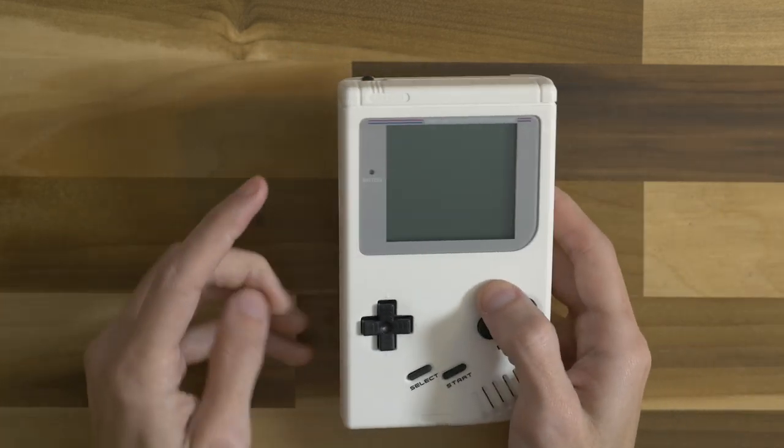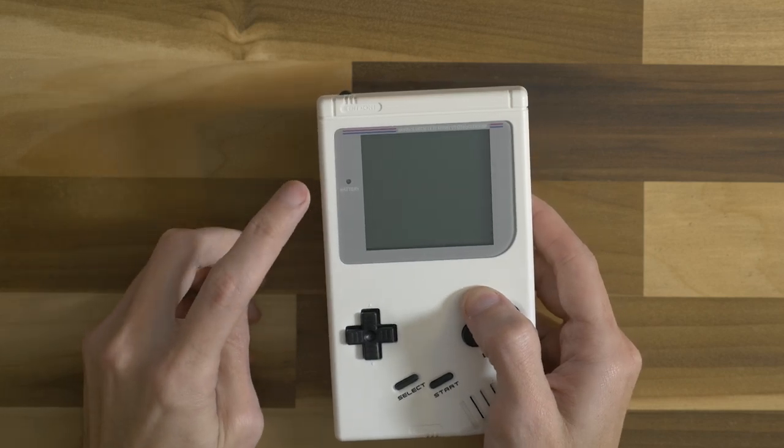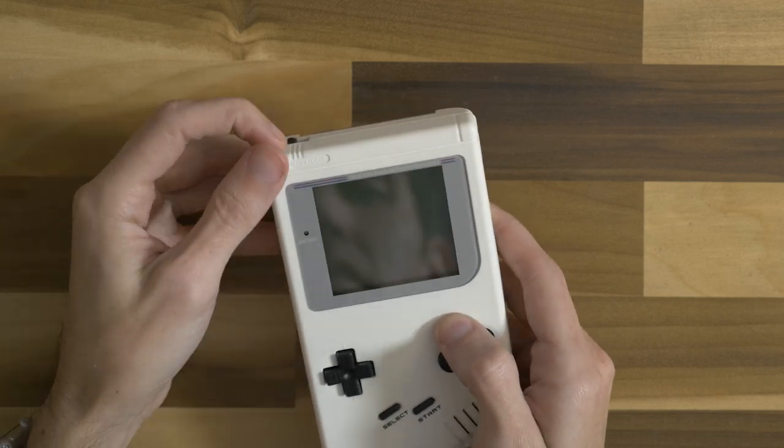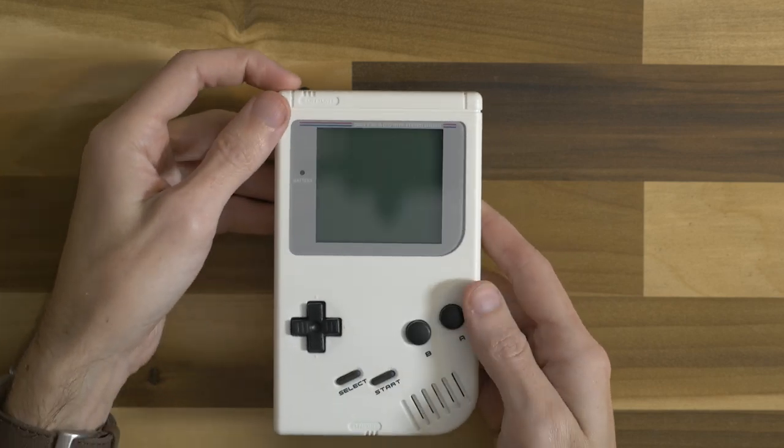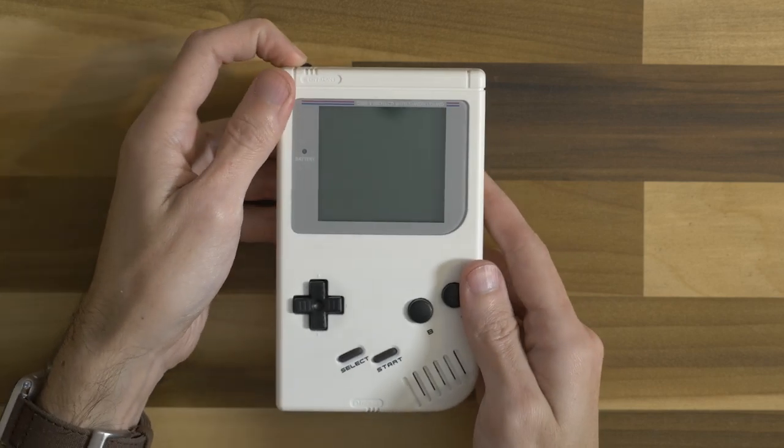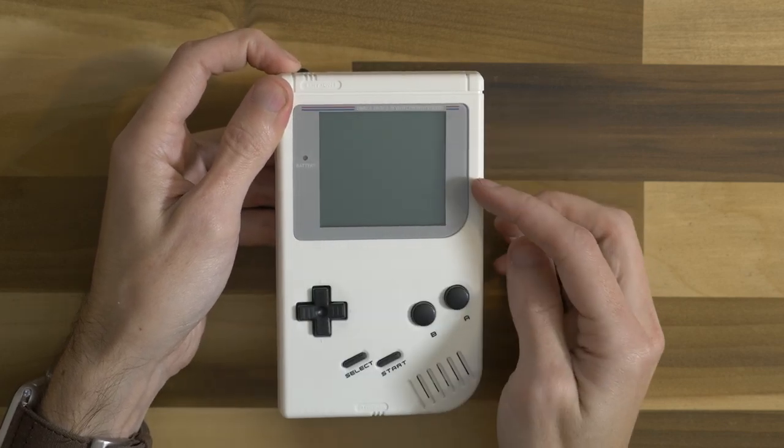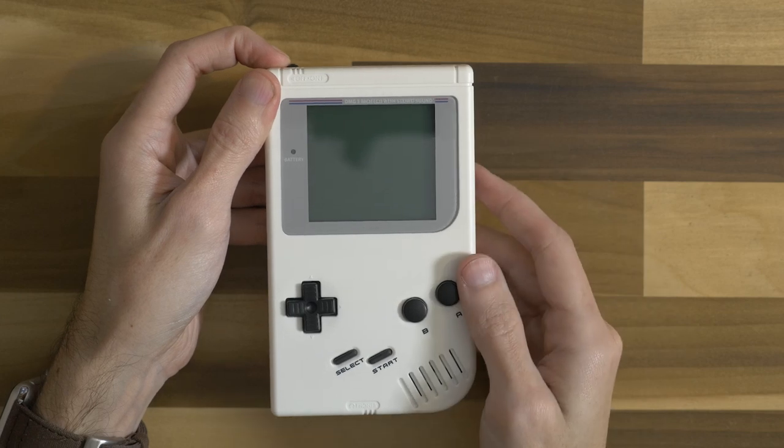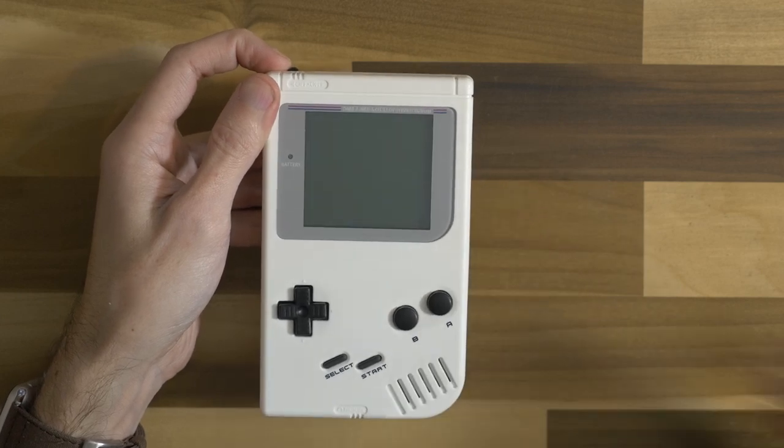So today we're going to be installing the 3-inch Benven DMG screen. This is a kit that Benven made that is slightly larger than the original DMG screen and it's already all ready to go. There's a couple small things to solder, but it's pretty easy.